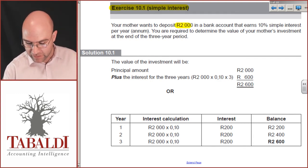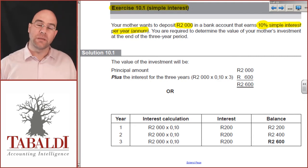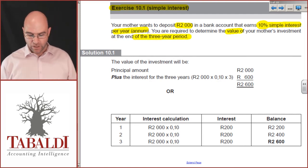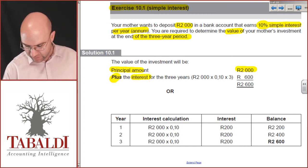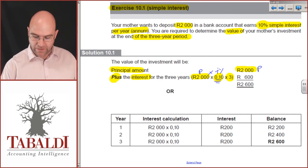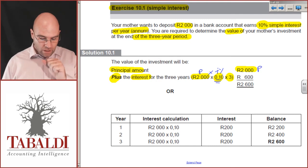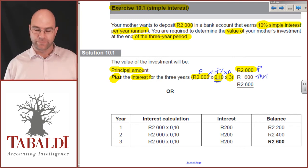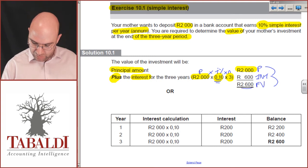So, your mother wants to deposit 2000 rand in a bank account that earns 10% simple interest per annum, 10% per year. You are required to determine the value of your mother's investment at the end of the three-year period. So, we start off with the principal amount of 2000. We then work out the interest for three years. So, 2000 times 10% times three years. Once again, principal was 2000. In my interest calculation, principal times the interest percentage, which I just put down as a fraction. 0.1 is equal to 10% times the number of years n gives me the total interest of 600.